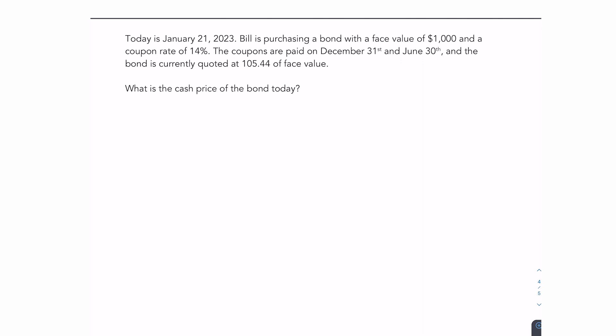So the first thing I need is the accrued interest. Now, to find the accrued interest, I need to calculate how many days have passed since the previous payment. Now, this one's a little bit easy because only 21 days have passed. The previous payment would have been on December 31st. Today is January 21st. So first step, let's find our coupon payment.